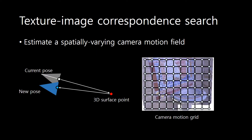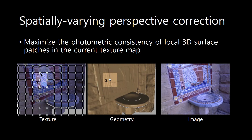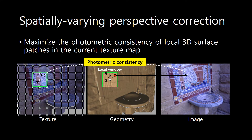To mitigate the mismatch between the current color image and the texture map, we estimate the spatially varying camera motion field of the current frame. We optimize the camera motion grid by maximizing the photometric consistency of the local 3D texture patch with respect to the image.